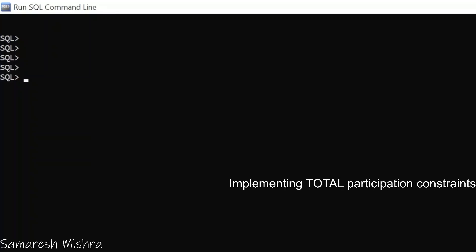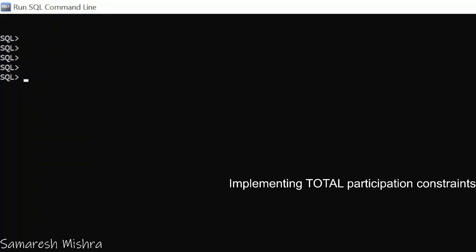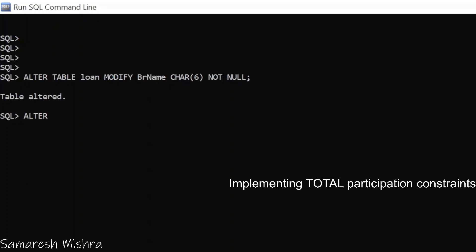Let us implement the total participation constraint by making the foreign key not null. In the loan table: ALTER TABLE loan, modify branch name character(6) not null. By this way we can make it not null. Similarly in the account table also, we write ALTER TABLE account, modify foreign key with type and size, then not null.